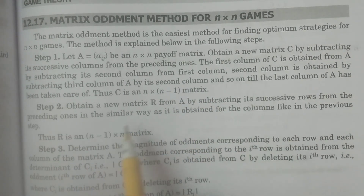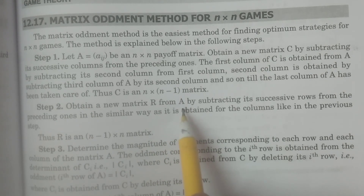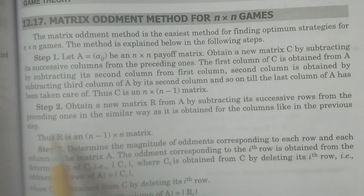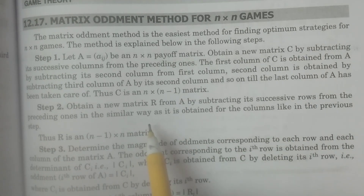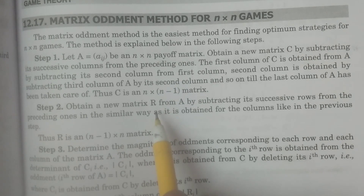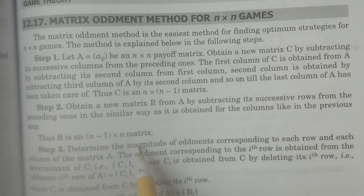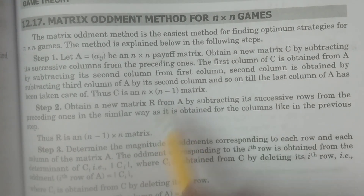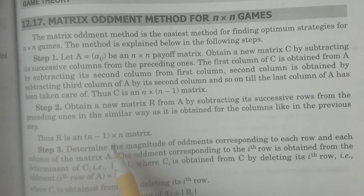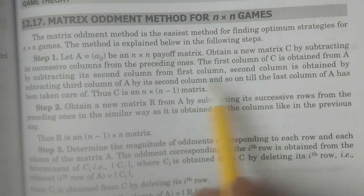Step 2: obtain a new matrix R, representing rows, from A by subtracting its successive rows from the preceding ones. Similar to how we calculated the C column matrix, the row matrix R is obtained by first row minus second row, second row minus third row, and so on. R is an n minus 1 by n matrix — one row will be reduced. For a 3 by 3 matrix, you will have 2 rows only. So in step 1 we determined C, and in step 2, R.